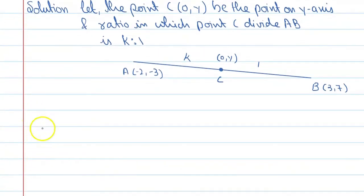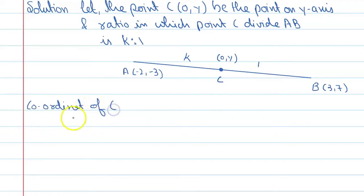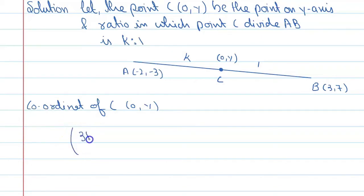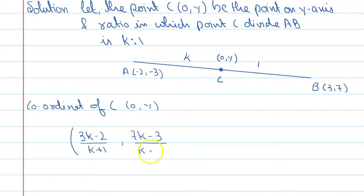With the help of section formula, we know that coordinate of C is equal to zero comma y. This will be equal to: 3k minus 2 upon k plus 1 comma 7k minus 3 upon k plus 1, equal to zero comma y.